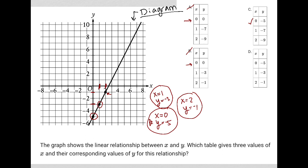Choice C has 0, negative 5 — that's perfect. But looking at the next line, when x is 1, y is negative 7. As we can see, when x is 1 we should have y equals negative 3, so choice C is gone. Choice D is perfect on x equaling 0 with y equaling negative 5, also good on x equals 1 with y equals negative 3, and x equals 2 with y equals negative 1. Therefore choice D must be the correct answer.